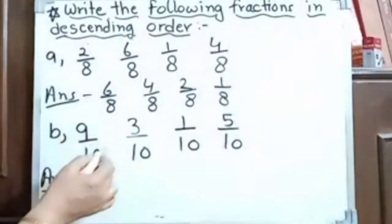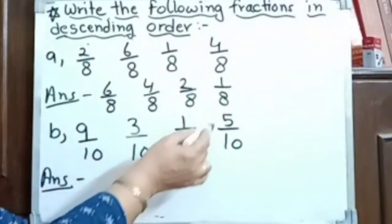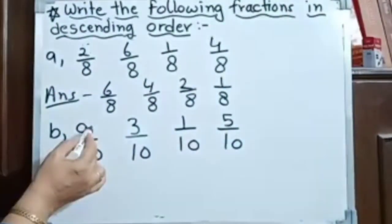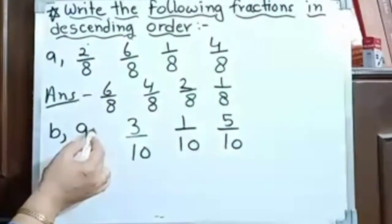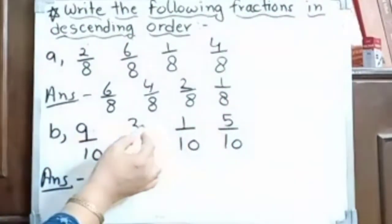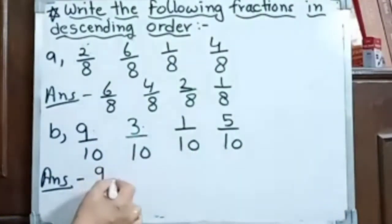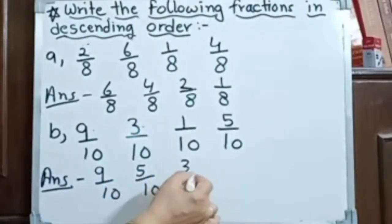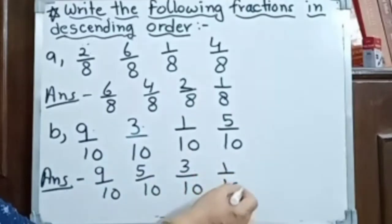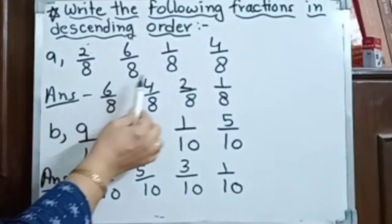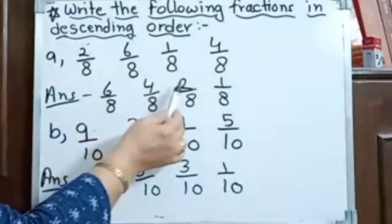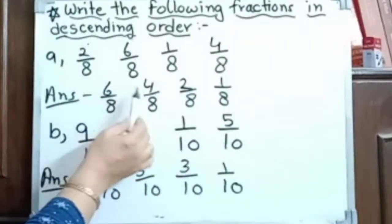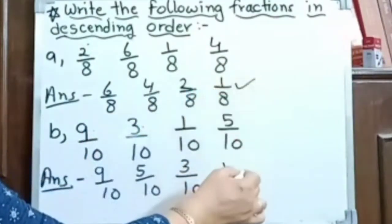Now here we have 9 upon 10, 3 upon 10, 1 upon 10, and 5 upon 10. The denominator is the same. So greater numerator is the greater fraction. First take 9, then 5, then 3, then 1. So descending order is: 9 upon 10, 5 upon 10, 3 upon 10, 1 upon 10. Bigger to smaller — these are descending order fractions.